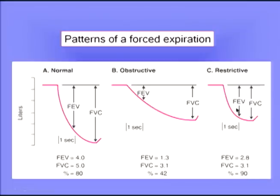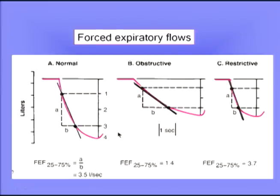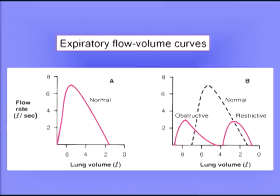We can also see this in the forced expiratory flows — the average flow rate during the middle of the expired volume. In the normal subject, the flow rate was 3.5 liters per second; in obstructive disease it was grossly reduced to 1.4; but in restrictive disease here, the forced expiratory flow is 3.7 — actually exceeding the value in the normal subject. So again, that's an example of the fact that the patient is able to exhale initially at a very high flow rate. That's also seen in the flow volume curves.